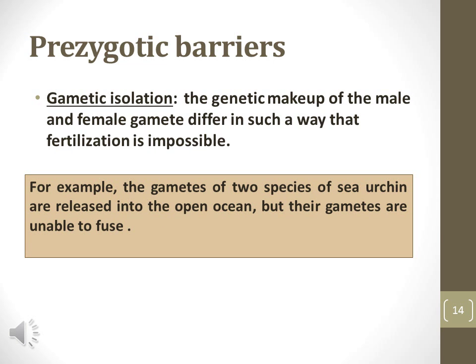The last type of prezygotic barrier discussed is gametic isolation. Gametic isolation arises when gametes of individuals of different populations are incompatible and cannot form a zygote. For example, the gametes of two species of sea urchin are released into the open ocean, but their gametes are unable to fuse.